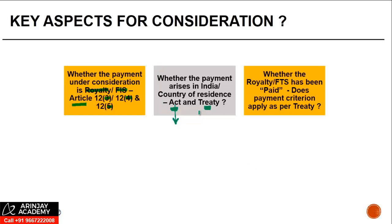The third key aspect is whether the royalty or FTS has been paid, because as mentioned, if it is arising but not paid, the tax liability technically in the hands of the non-resident may not arise. It is a separate and debatable question whether withholding tax has to be applied at the time of credit or payment, but from a taxability perspective of the non-resident, unless and until the payment is made, the tax liability is not triggered.